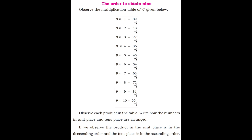To obtain 9, observe the multiplication table of 9. 9 ones are 9, 9 twos are 18, 9 threes are 27, 9 fours are 36, 9 fives are 45, 9 sixes are 54, 9 sevens are 63, 9 eights are 72, 9 nines are 81, 9 tens are 90. Observe each product — in the unit place the digits go 9, 8, 7, 6, 5, 4, 3, 2, 1, 0 (descending order) and in the tens place 0, 1, 2, 3, 4, 5, 6, 7, 8, 9 (ascending order).